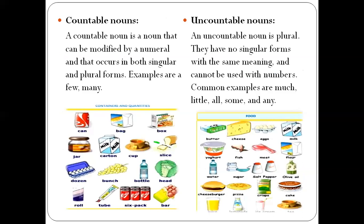Quantifiers is having further three types: countable noun and uncountable noun. Countable nouns are those nouns which can be easily counted. Let me read the statement for you. A countable noun is a noun that can be modified by a numeral and that occurs in both singular and plural form. Examples are few or many. You can see.